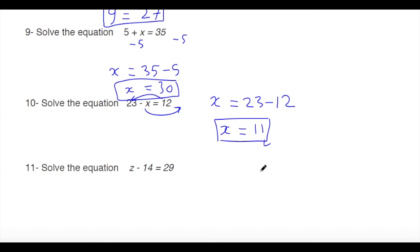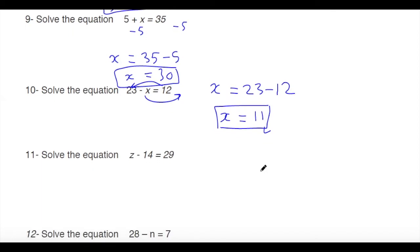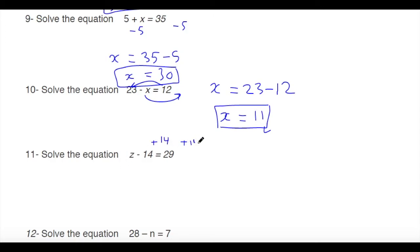Next: solve z minus 14 equals 29. Add 14 to both sides, so z equals 29 plus 14, which gives z equals 43.